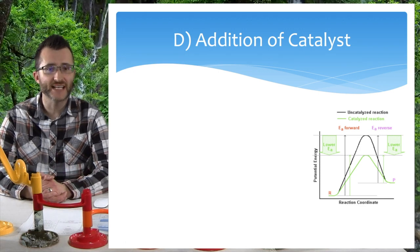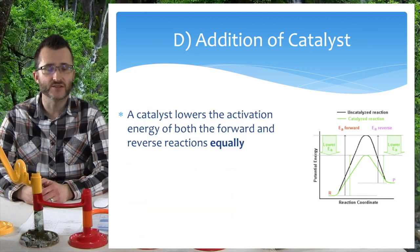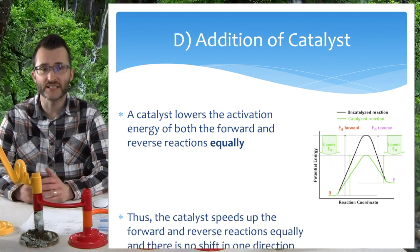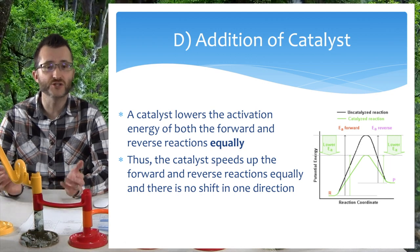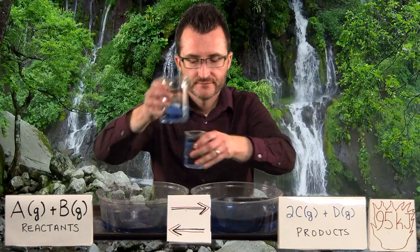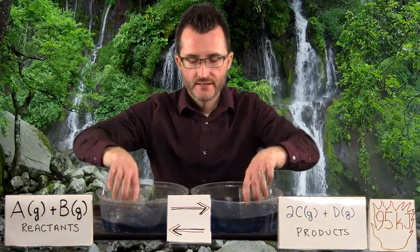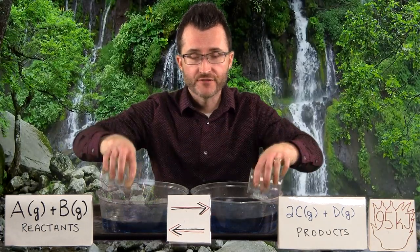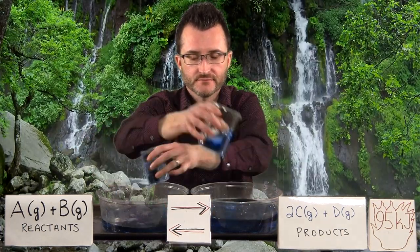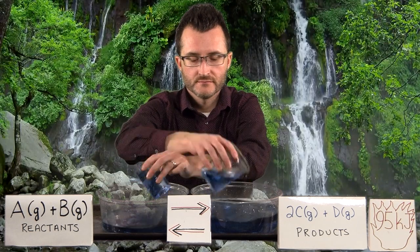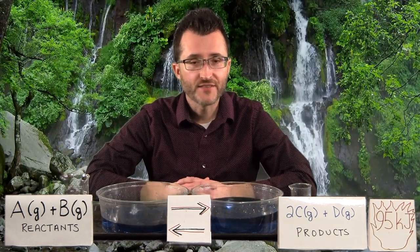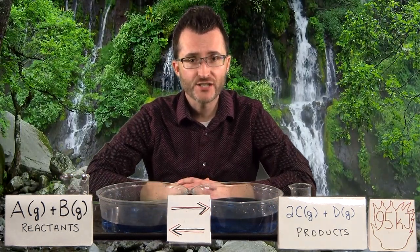Finally, we have the addition of a catalyst. A catalyst lowers the activation energy of both the forward and reverse reactions equally. Thus, the catalyst speeds up the forward and reverse reactions equally, and there is no shift in one direction. Catalysts don't give a shift! Notice that the addition of a catalyst didn't cause any net shift in our equilibrium. Catalysts don't give a shift!